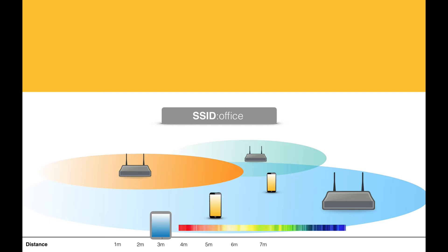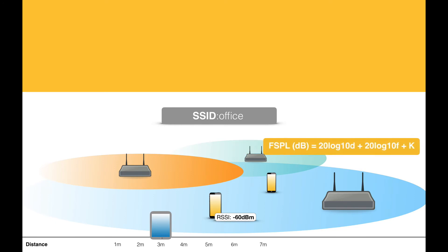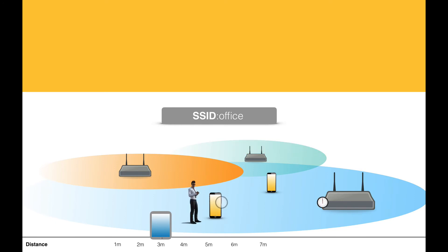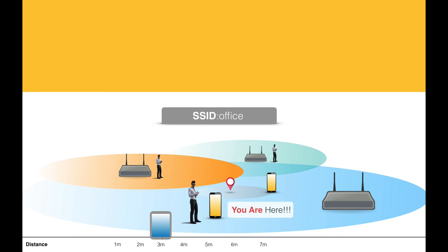We will look at ranging and positioning, starting from the classic propagation-based methods such as RSSI, moving to the new high-definition location technique: round-trip time-of-flight. Wi-Fi location and ranging is starting to make a huge difference, and this course is all about it.